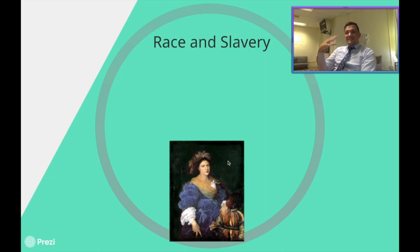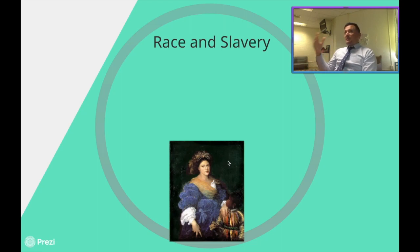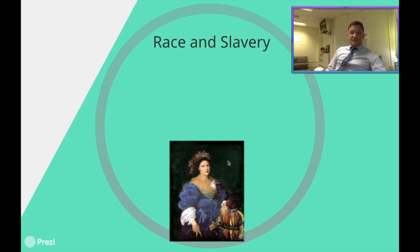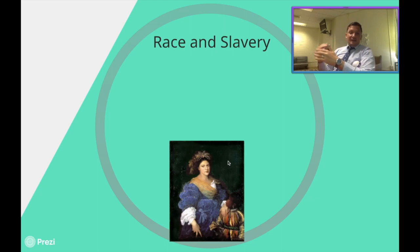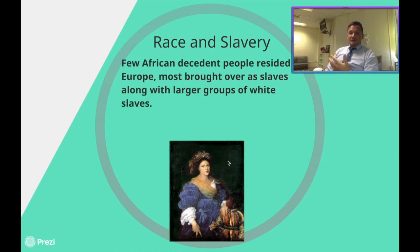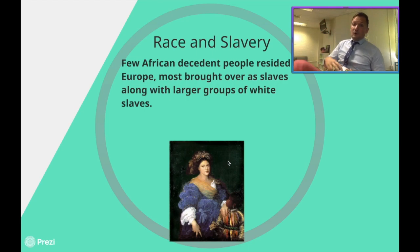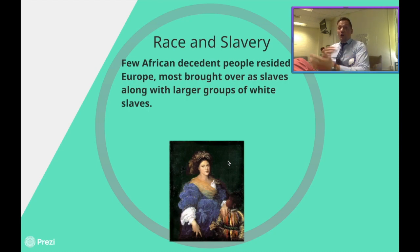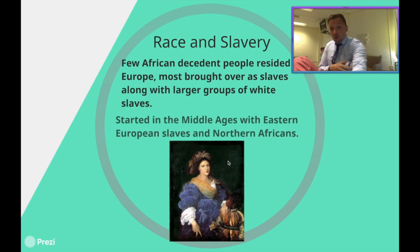Now, the hidden thing is this concept of race and slavery. We've been talking about white Europeans, particularly in Italy, and the amount of influence the Renaissance had on them. But you've got to remember that there were subservient classes in Renaissance Italy and Europe as well, and slavery was an active thing going on. Very few African descendant people existed or resided in Europe during the late 1400s and early 1500s. Most Africans in Europe were brought over as slaves, along with larger groups of white slaves. So the very first groups of slaves coming to Europe were a mixture of white and African, mostly from North Africa.